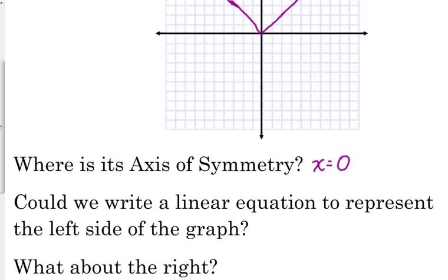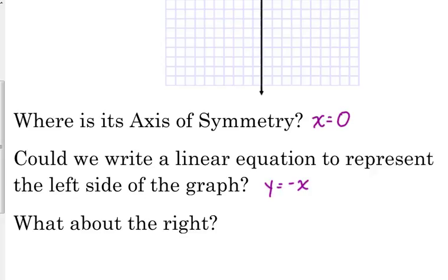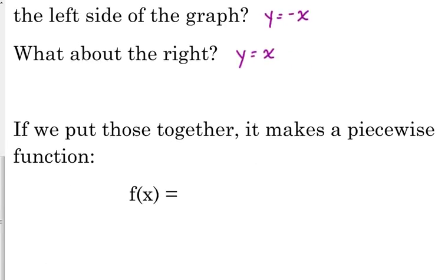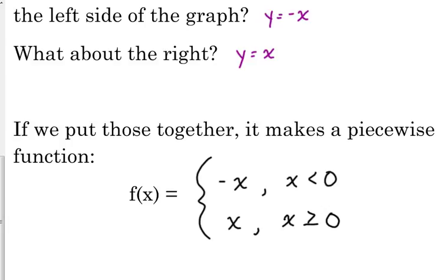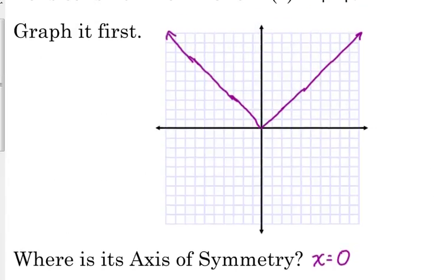The left side is the line y equals negative x, and the right side is y equals positive x. As a piecewise function, it's negative x when x is less than 0, and positive x otherwise. It doesn't matter which piece has the equal sign because the absolute value of x is a continuous function — they meet at the same value where they change.